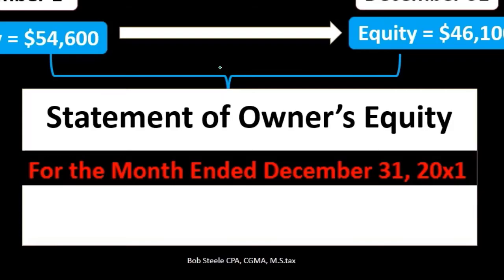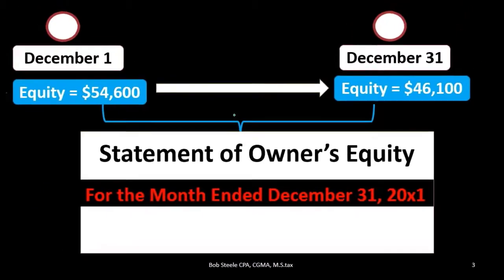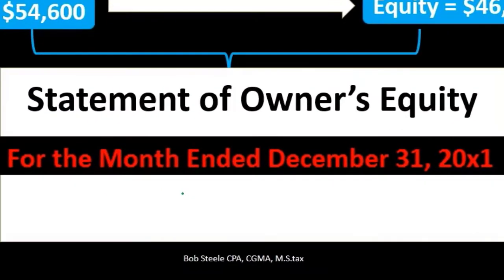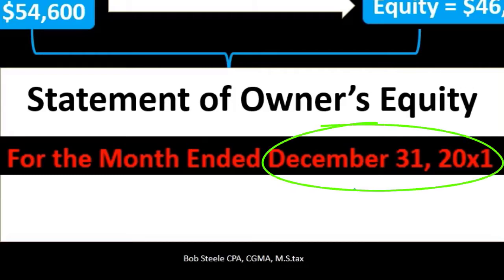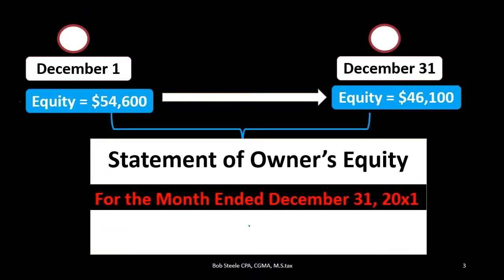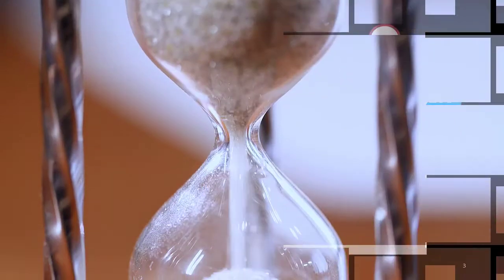We're going to have the same kind of phrasing we would have on the income statement. We cannot just have the date of December 31st, 200X1, as we would on the balance sheet. We need 'for the month ended' — we need that beginning time frame and that ending time frame.